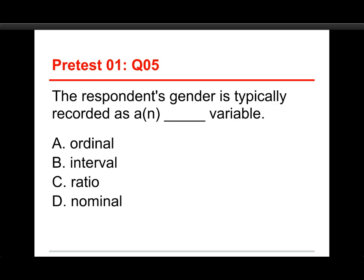The last question in this five-question quiz: respondent gender is typically recorded as a blank variable. The choices are ordinal, interval, ratio, or nominal. The answer is nominal. Nominal just means categories — nominal means name — and gender (male or female) is a category, so it's nominal. Ordinal means you can say someone has more of something; interval means set units separating people by specified amounts; ratio means all of that plus a true zero point. None of that applies — gender is a nominal variable, as is biological sex. That's the five questions from the first quiz. Stick around for the practice test also. Thanks.